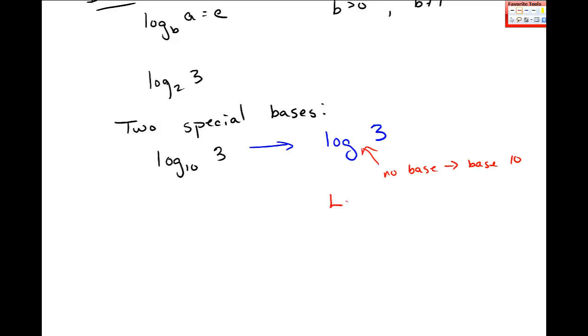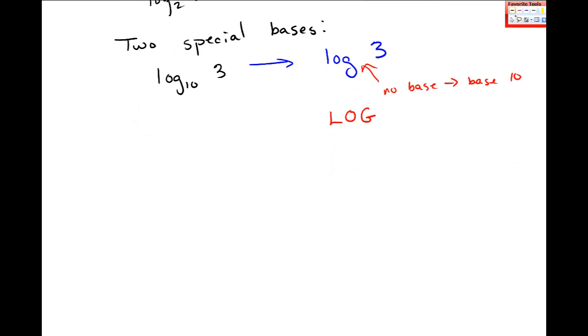You'll see on your calculator the log button like that. That is log base 10. The other log that we use quite a bit is log base e, log base e of 17. This is called the natural log. You'll see that written as ln of 17. No base indicated and it's not written as log. This is what you see on your calculator as ln.